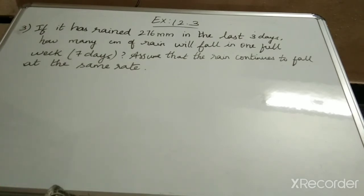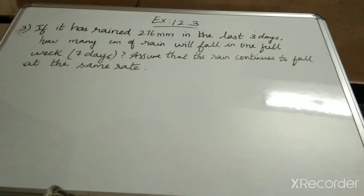So here for 3 days it is raining 276 mm. Therefore we have to find for 7 days — so unitary method — first we have to find for 1 day.